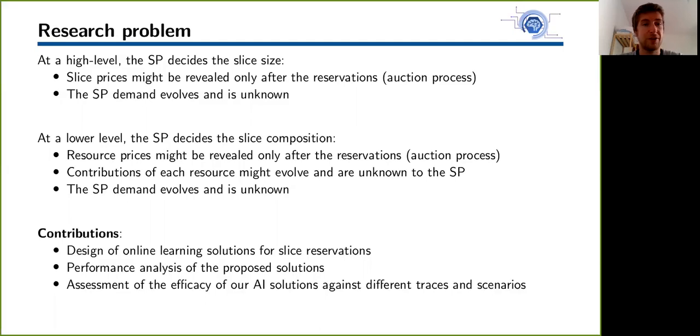At a lower level, the service provider can decide the slice composition. Now we go into the blended vector and we reserve for each component of the slice vector, so all the different types of resources that compose the slice. The resource prices are revealed only after the reservation, and the contribution of each resource to the utility of the service provider might evolve as well. The service provider demand again evolves and is unknown.